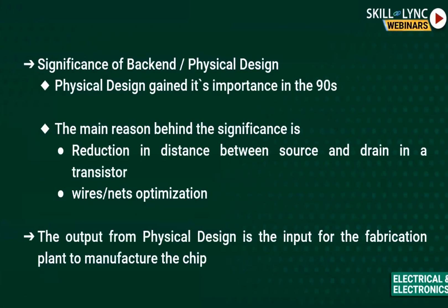Physical design gained its importance in the 1990s. The main reason for this significance is the reduction in distance between the source and drain in the transistor. As the distance decreases, there is a shrink in technology. Initially we were working on 180nm, 90nm, 65nm, 40nm, and now we are into very deep submicron technologies like 7nm. This reduction in size contributes to the importance of physical design because when you decrease the distance, you have lots of complications in the design.